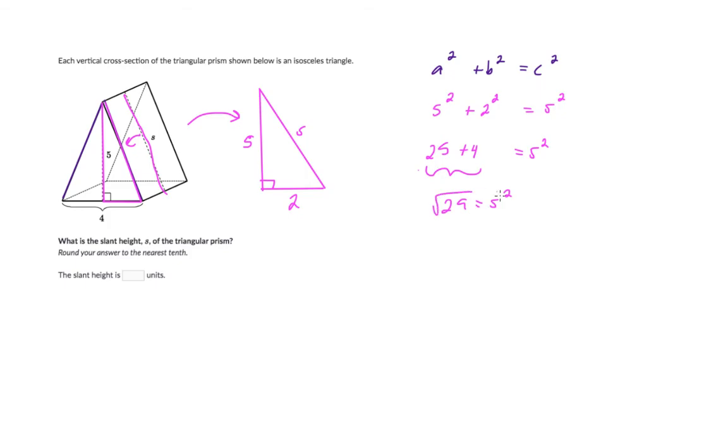And if we combine like terms we get 29 is equal to s squared. Now we'll take the square root of both sides to get this because we are asked to round to the nearest tenth so when we do this you get s is equal to, now I know it's going to be like five point something because it's in between the square root of 25 and the square root of 36 which would be six so let's check this out. I need a calculator for this real quick, square root of 29 is 5.38.